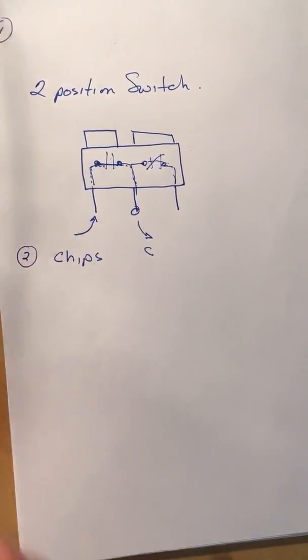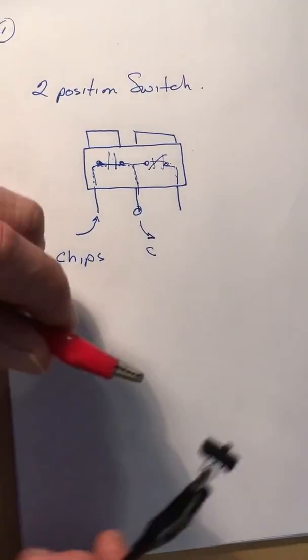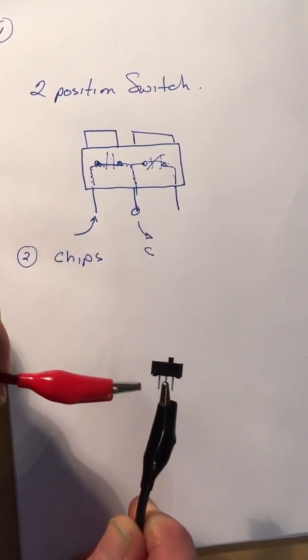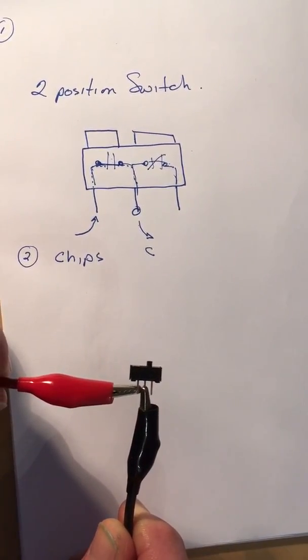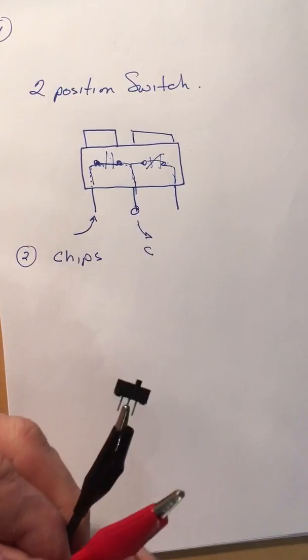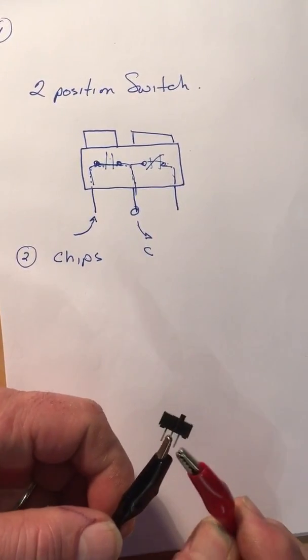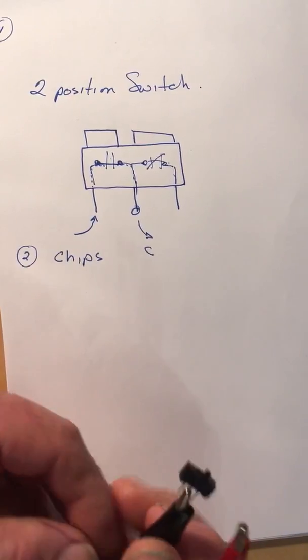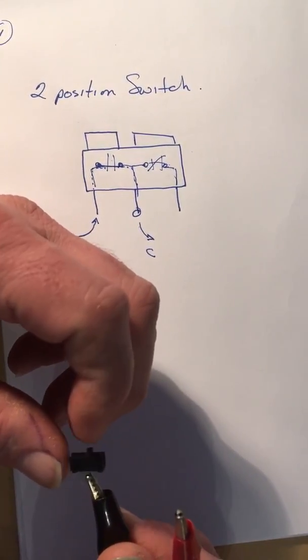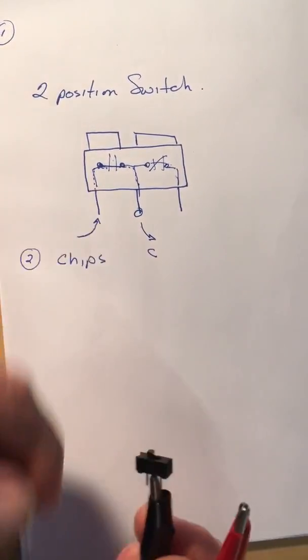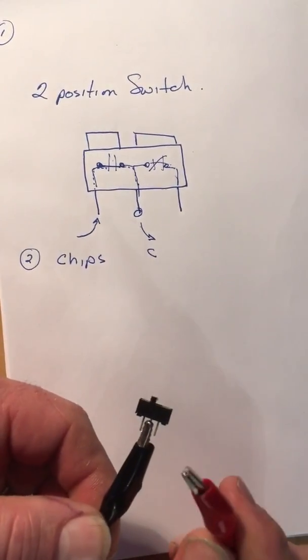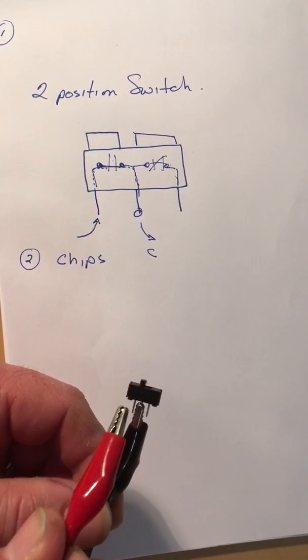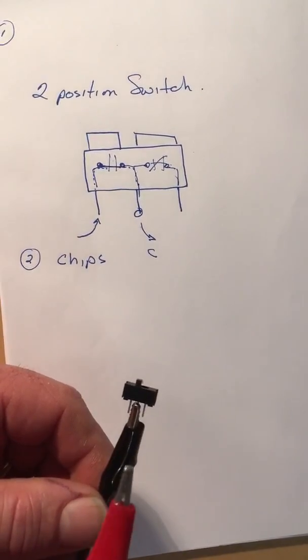So I have my meter connected here, I've just got on a continuity, so in this position I've got the switch all the way to the right and I should get no continuity here. Now if I check over here I'll get continuity between these two terminals. So then if I turn the switch the other way, I no longer have continuity here but I have continuity here.